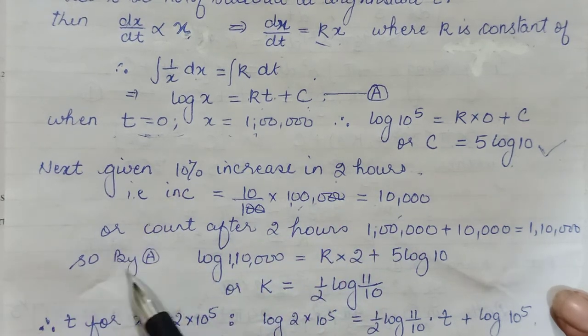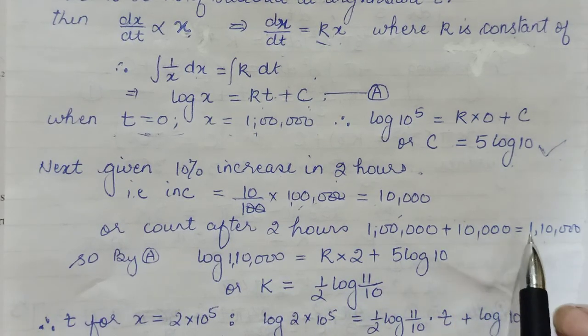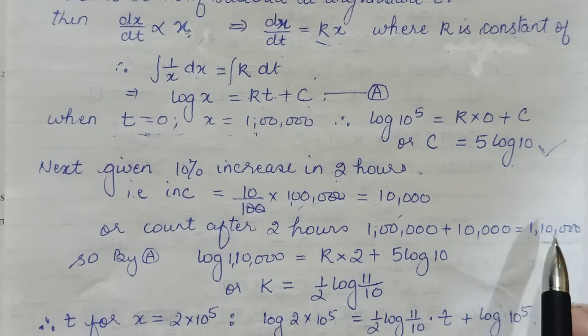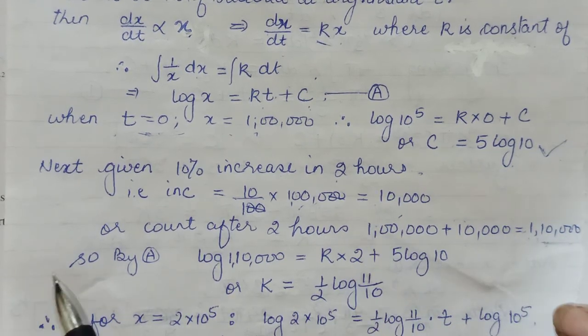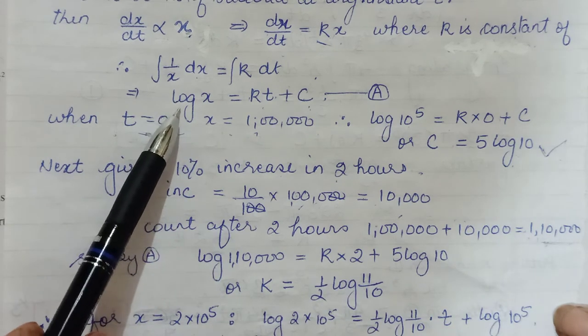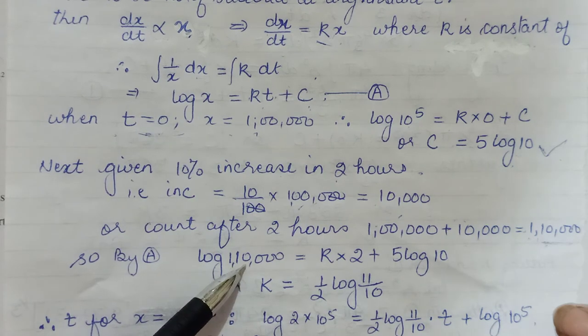So after 2 hours count will be how much? After 2 hours, 1 lakh plus increase. So 1 lakh 10,000. This is the value of x at t equals 2. So